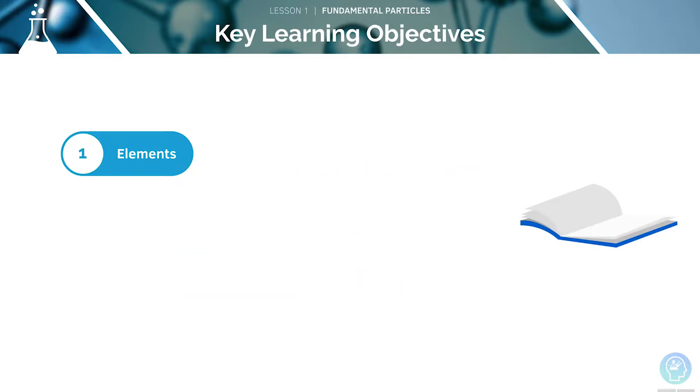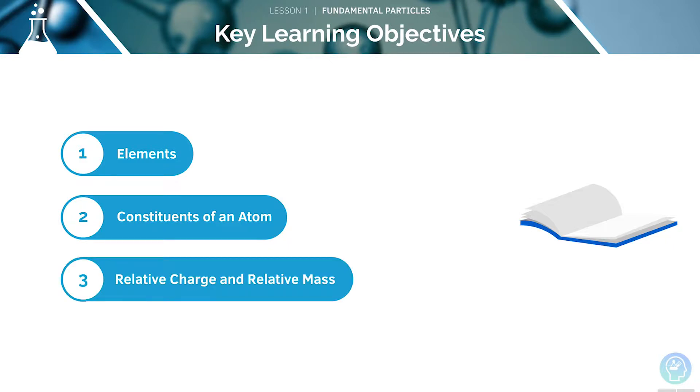We've got a few key learning objectives to cover in this tutorial. Firstly, we'll look at elements, then we'll move on to the constituents of an atom, and finally we will look at relative charge and relative mass.